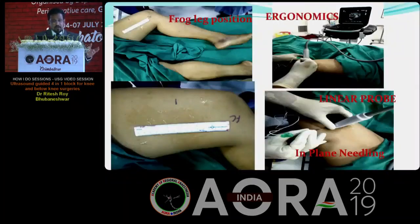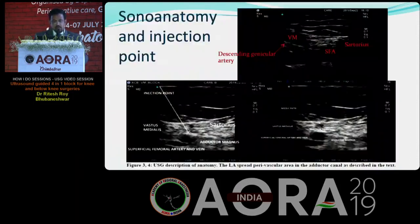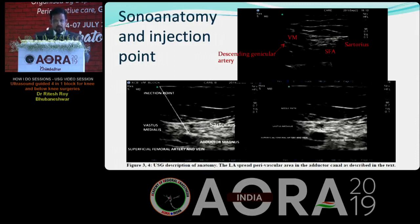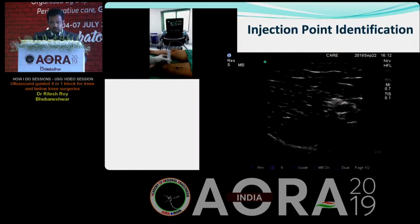Here is the ergonomics and patient position: the leg is externally rotated, abducted, and the knee flexed — the frog leg position. Ergonomics is most important. We use a linear probe and go for in-plane needling. The sonar anatomy shows the vastus medialis laterally, the sartorius medially, and the superficial femoral artery sitting in between. You can find the descending genicular artery coming out, and just above that we slide the probe slightly and inject the drug — that is how we identify the injection point.